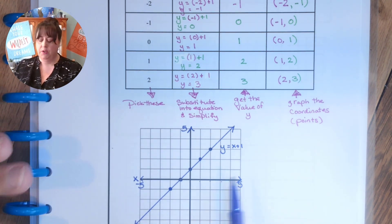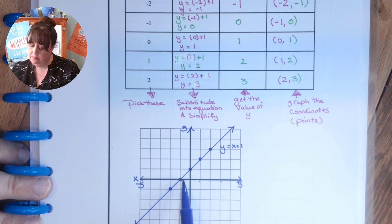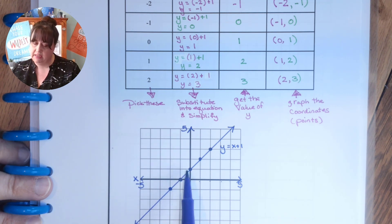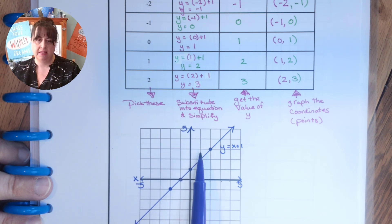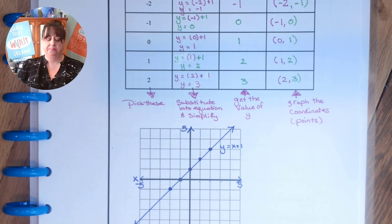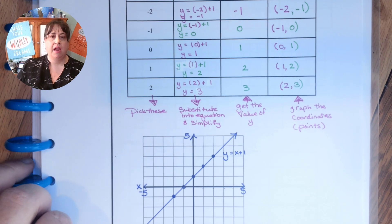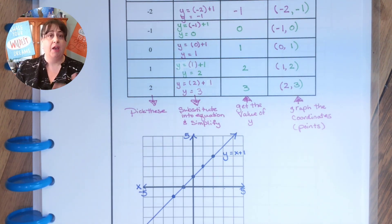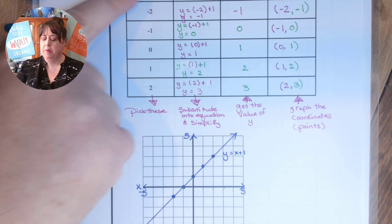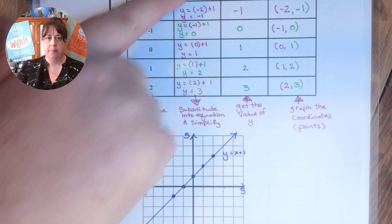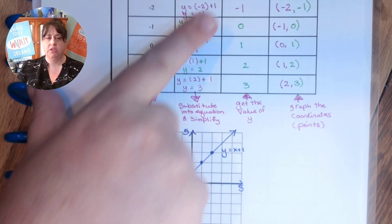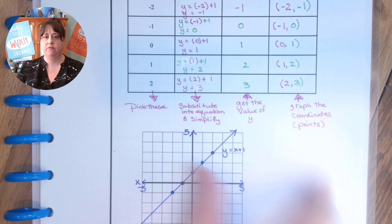If you remember we went over slope — we can actually see the slope here. The change in y is one and the change in x is one. You can see that stair step starting to happen that we've been talking about. So that is graphing a line using coordinates. Remember: you get to choose your x's, you plug into the equation, you find your y's, and you graph your points.